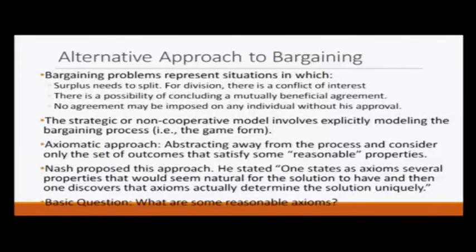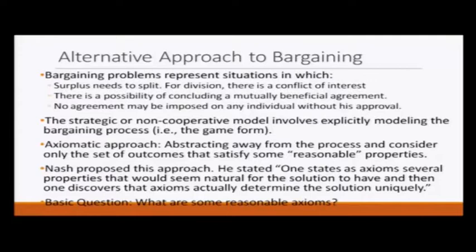No agreement may be imposed on any individual without his approval — that is the third thing. In the previous module what we did is called non-cooperative or strategic modeling. We explicitly modeled the process of how bargaining would take place — for example, one stage, two stage, three stage, or infinite stage alternating offer bargaining.